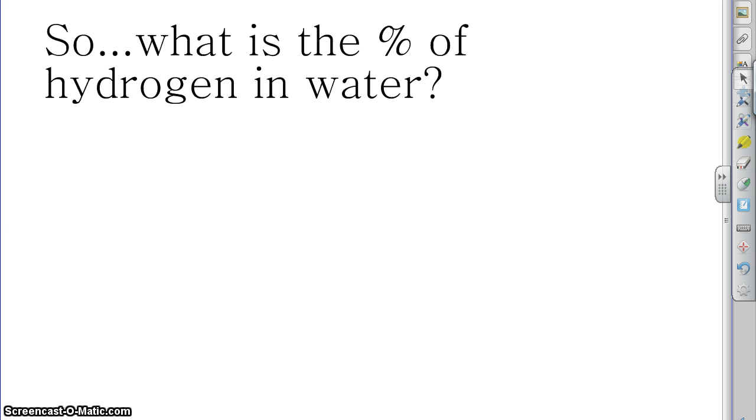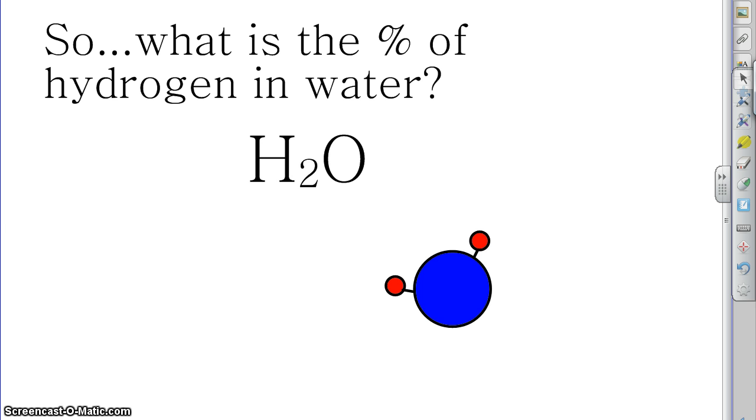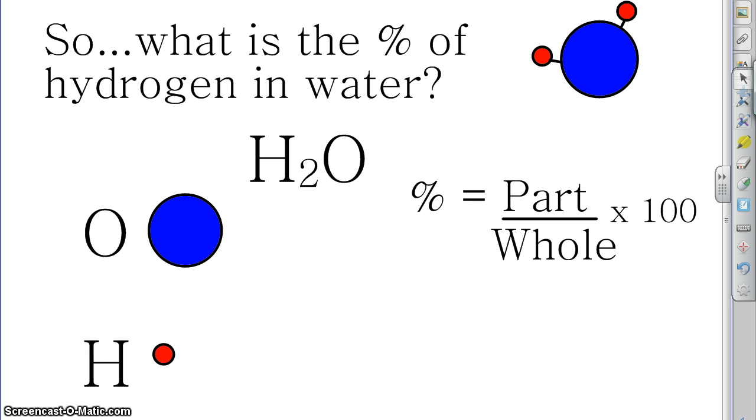So let's start as an example. What is the percent of hydrogen in water? Well, what is water? We know that water is H2O. If we draw it, you'll see it looks something like that. The blue thing represents oxygen and those two little red things represent hydrogen. So what percentage of this molecule is hydrogen? So we go back to our formula. Part divided by whole equals 100.